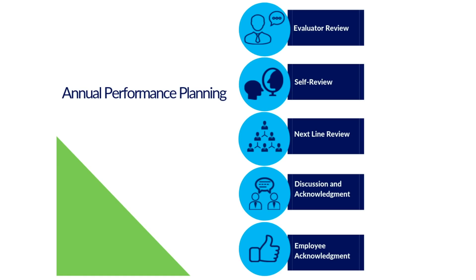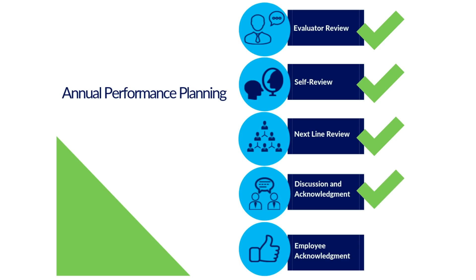Evaluators will complete an annual performance planning task on all performance-eligible employees, adding expectations for core competencies and creating three to five goals. You now have the opportunity to provide feedback on these goals through a self-review. Managers will consider your feedback and make any adjustments if necessary. The next-line supervisor will review your annual goal plan prior to the evaluator and employee discussion and signature steps. Annual performance plans should be completed by January 31.